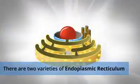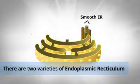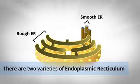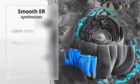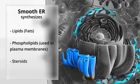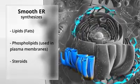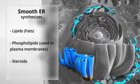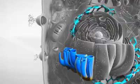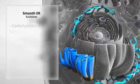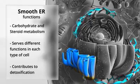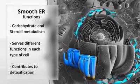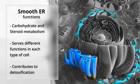There are two varieties of endoplasmic reticulum: smooth ER and rough ER. Smooth endoplasmic reticulum is responsible for synthesizing lipids, phospholipids used in plasma membranes and steroids. Smooth ER functions in several cellular processes, such as carbohydrate and steroid metabolism. Smooth ER serves different functions in each type of cell and contributes to detoxification.